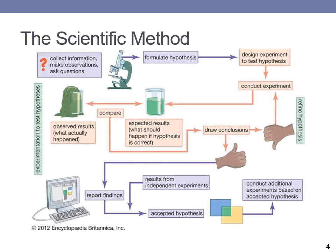We study science using the scientific method. The first step is making observations about something in the natural world. We notice patterns of behavior or trends and are curious as to why they happen. We collect information about our observations and use that information to formulate questions that can be answered about the natural phenomena by doing experiments. The questions begin with why, what, when, and how.